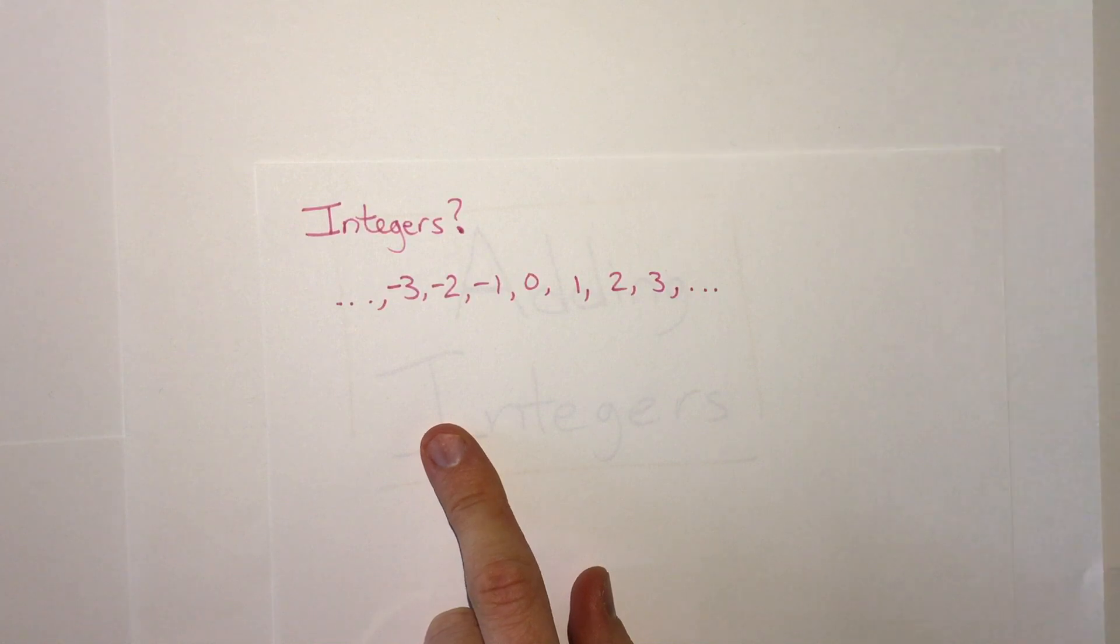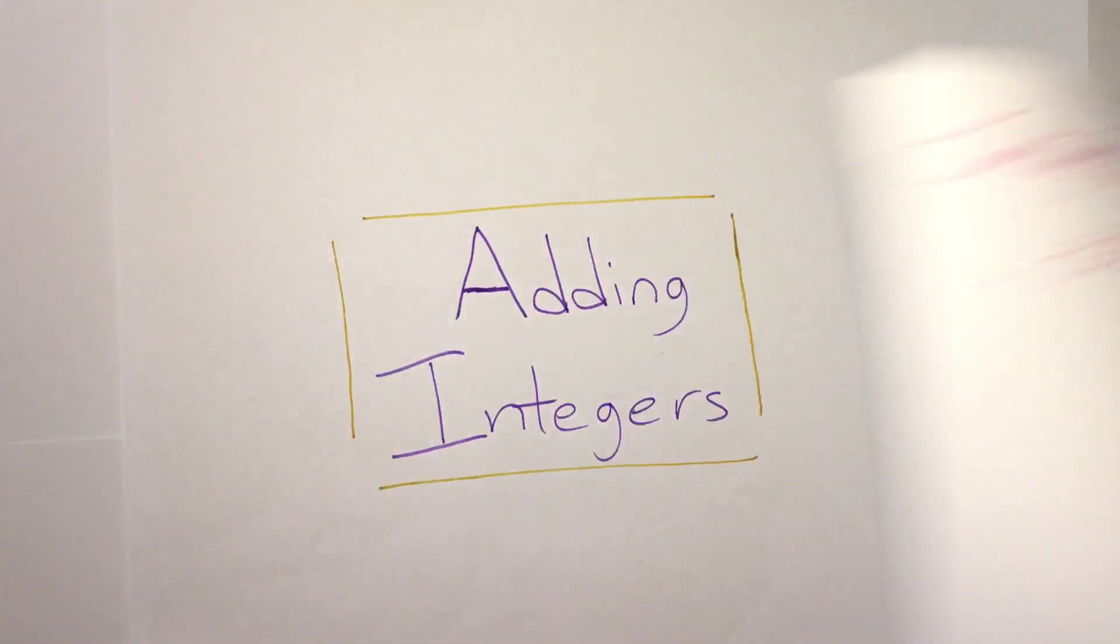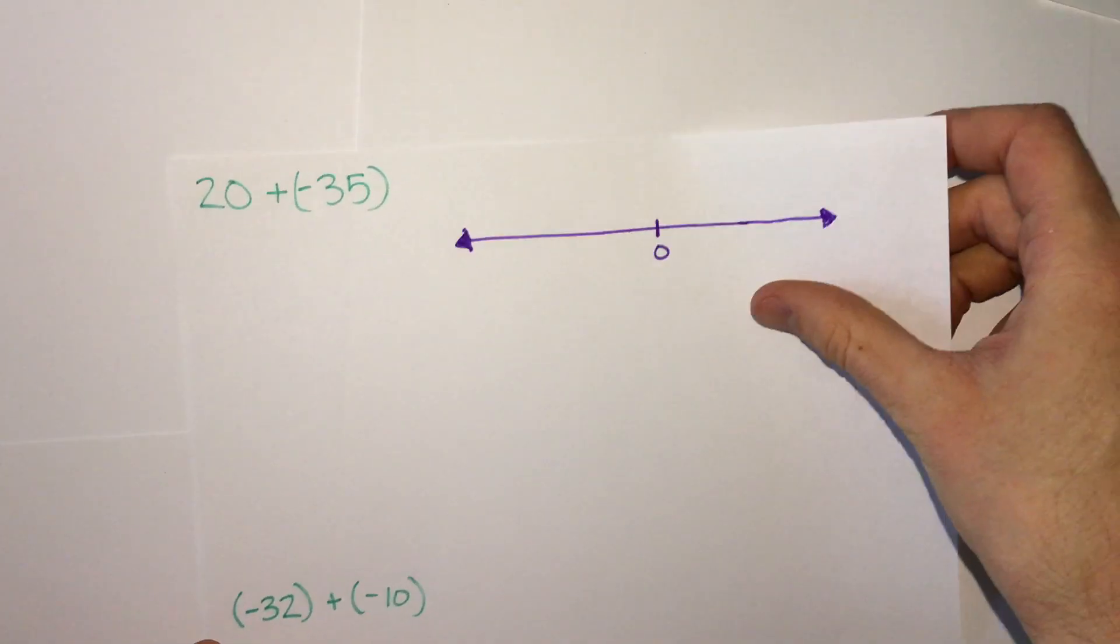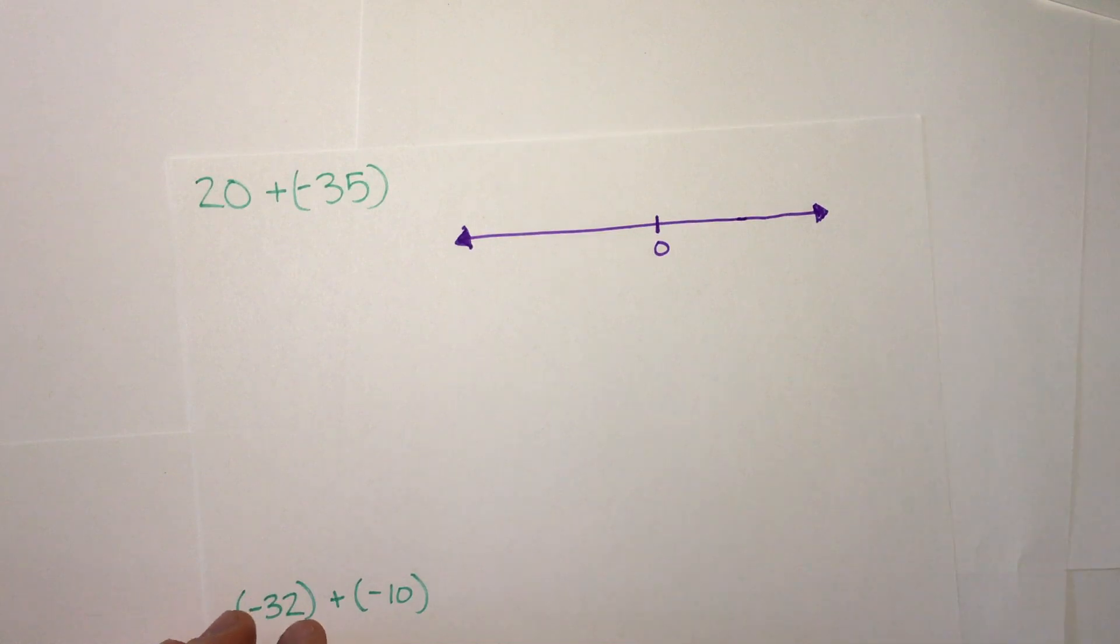So when we say we're adding integers, we're going to look at how do we add positive and negative numbers, or just negatives. So to start with, let's look at what happens when we do have one positive and one negative number.